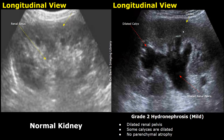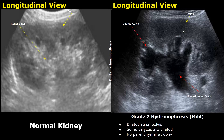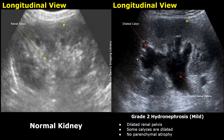This is another image of grade 2 hydronephrosis. The renal pelvis is dilated and the calyces are dilated in this region, but not all calyces are dilated. So we classify this as a grade 2 hydronephrosis.